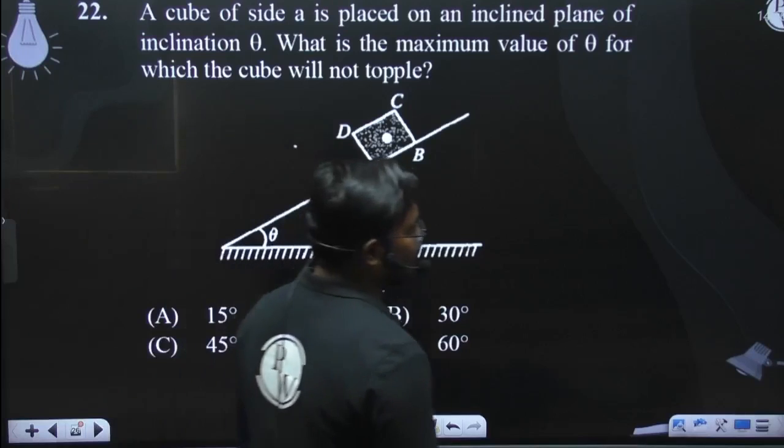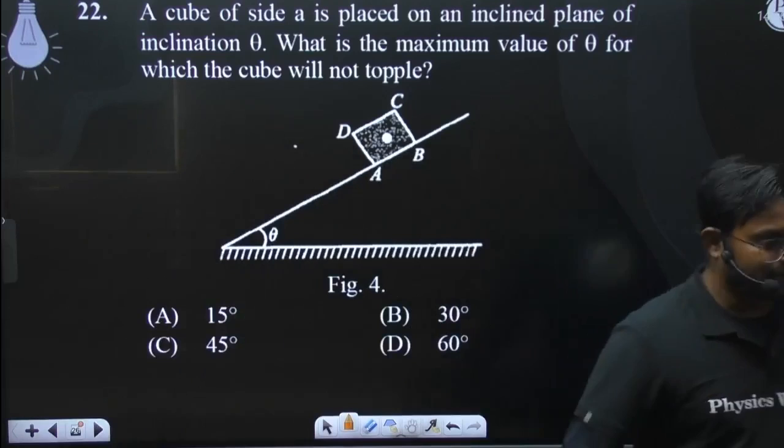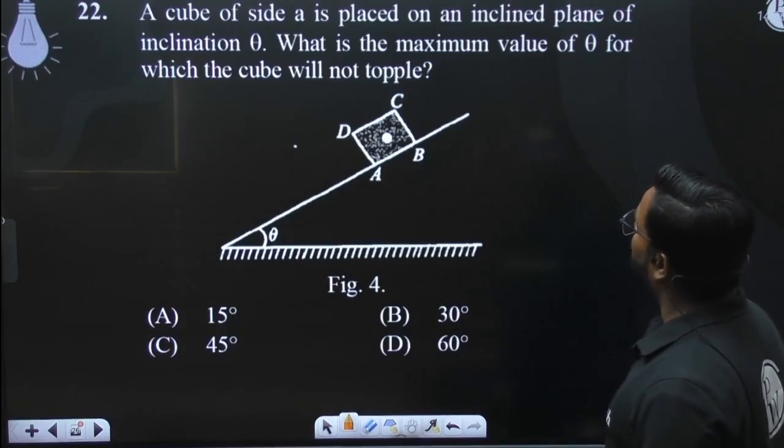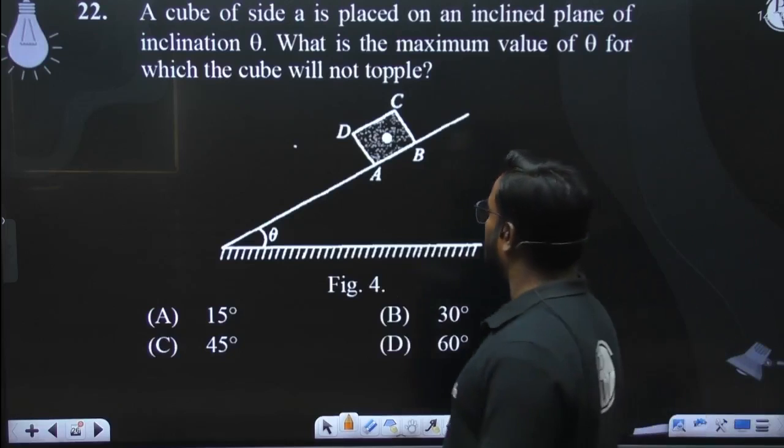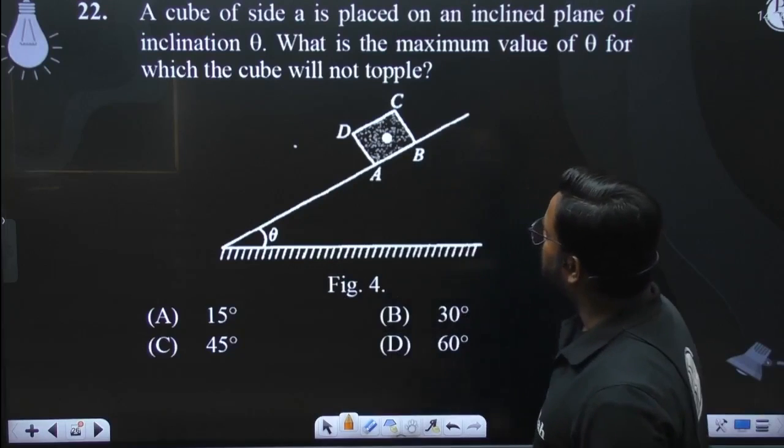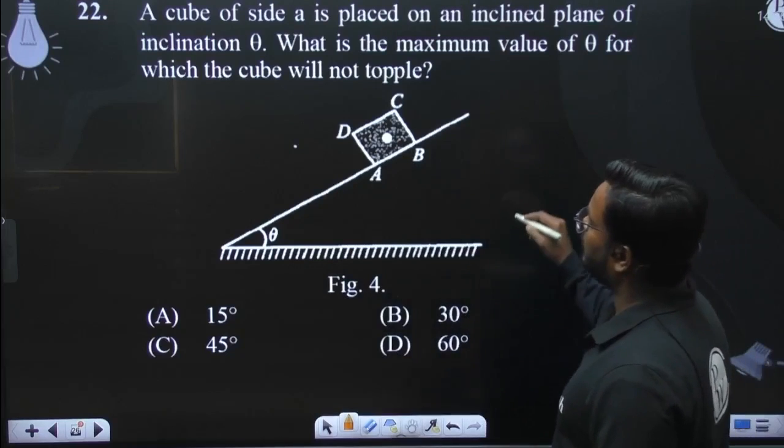Inclination kittah hai? Theta. What is the maximum value of theta for which the cube will not topple? What is the maximum value of theta for which the cube will not topple?